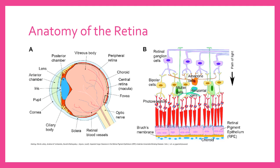You can see the bipolar layer, the horizontal cells, photoreceptors, the retinal pigment epithelium, as well as Bruch's membrane, which acts as a border between the choroid and the retina. With the eye overall, light first passes through the cornea and the anterior chamber. The iris can constrict or dilate to control the amount of light entering the eye. The light then passes through a clear lens, goes through the vitreous, and then hits a specific part of the retina.